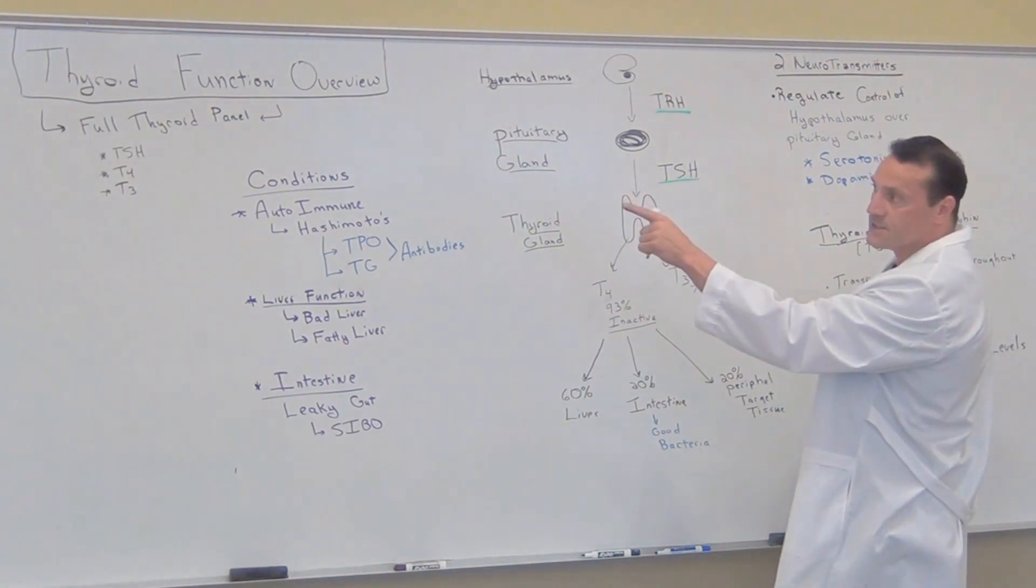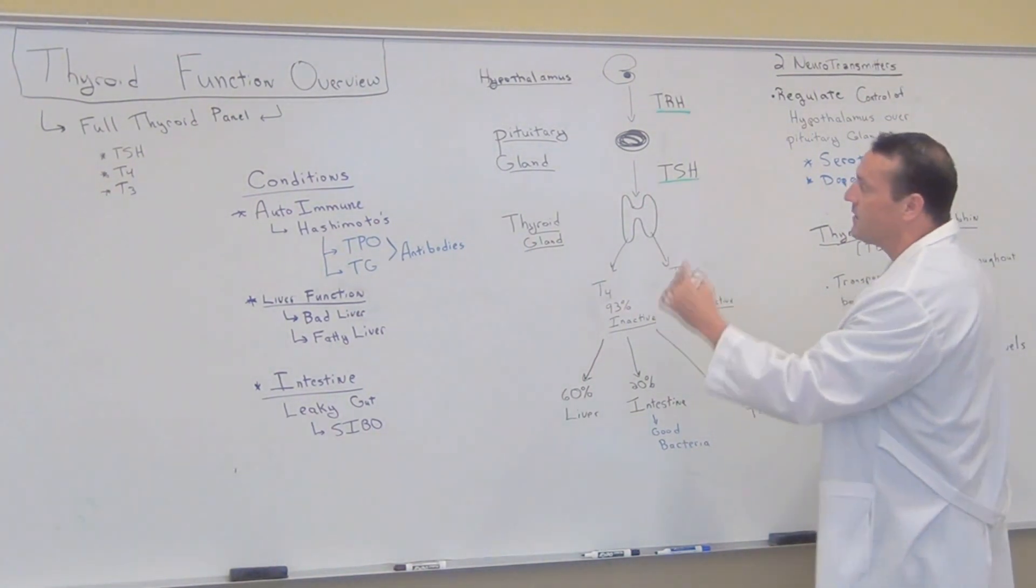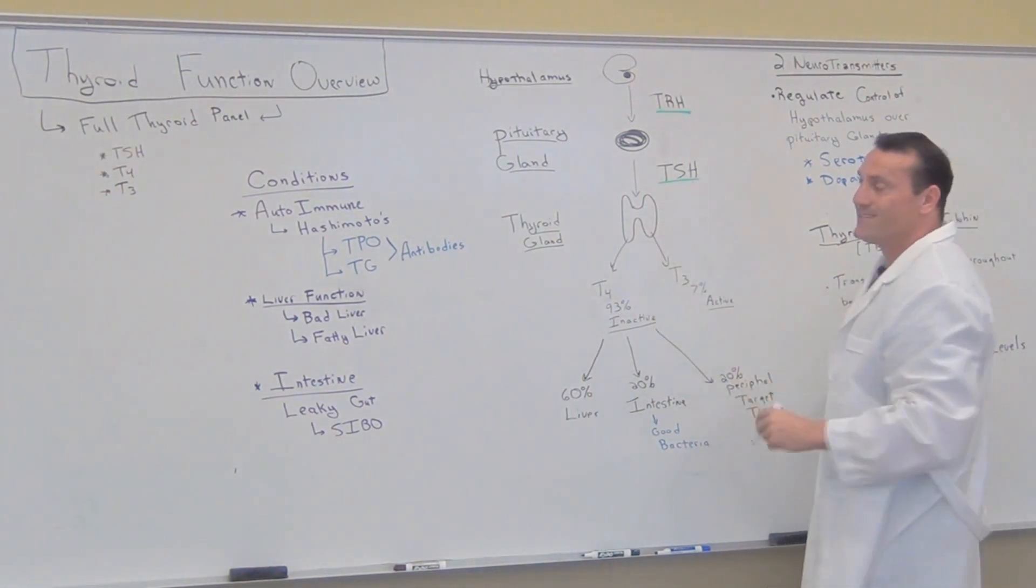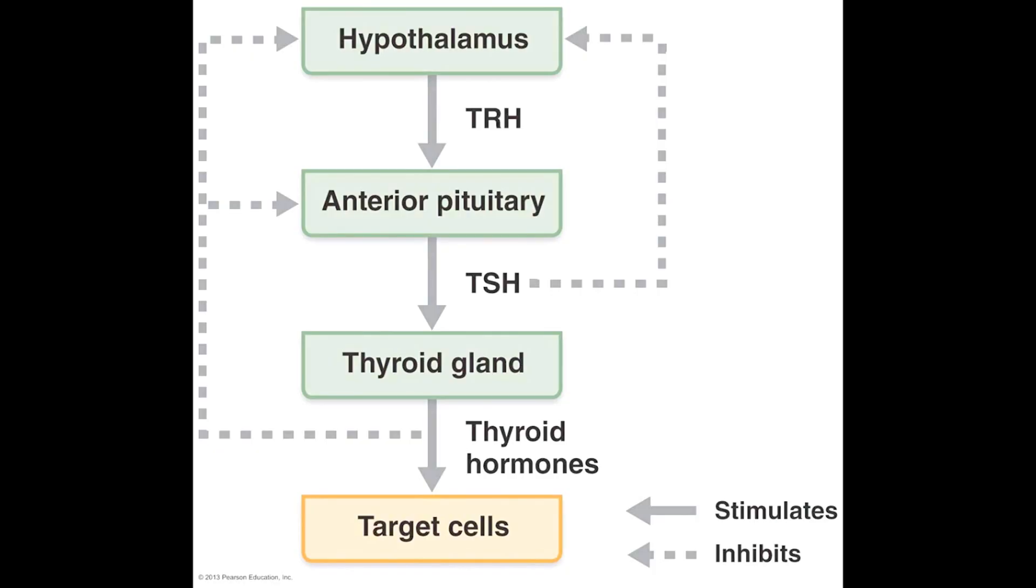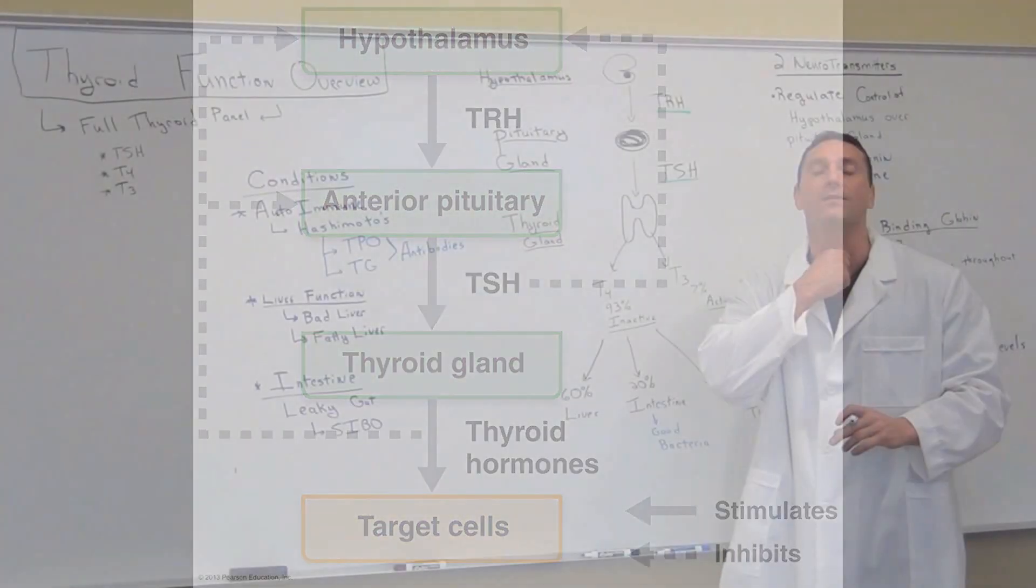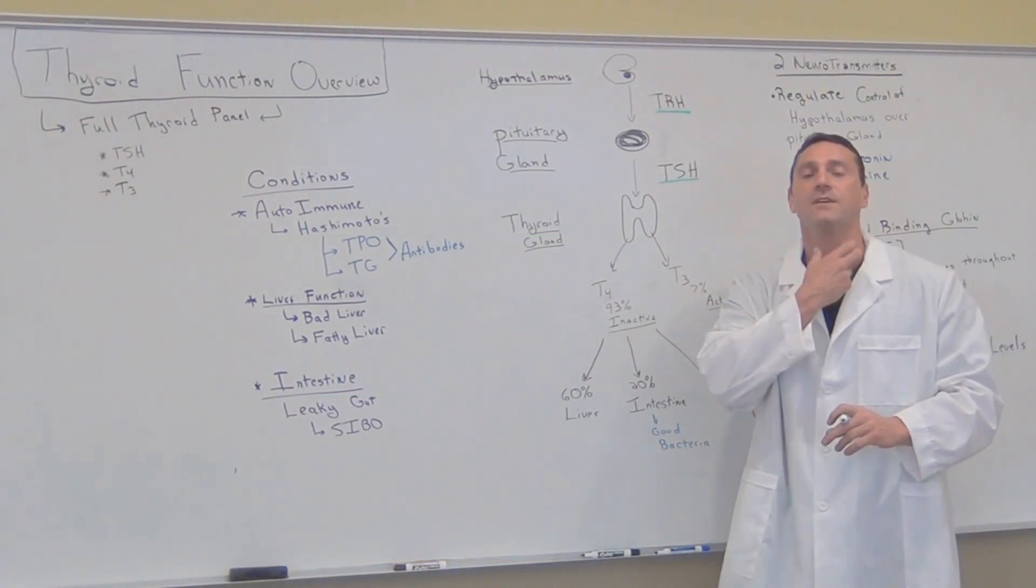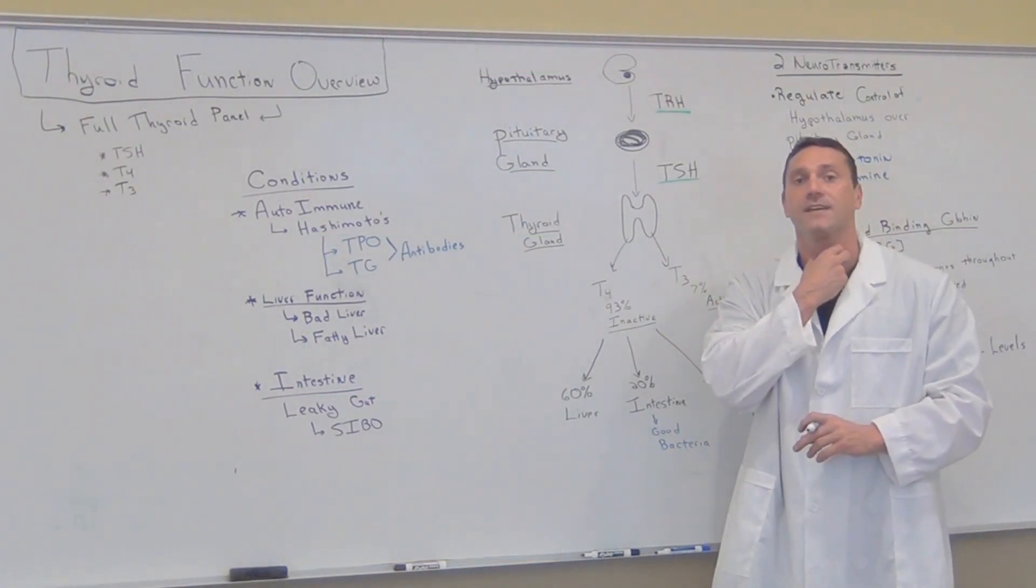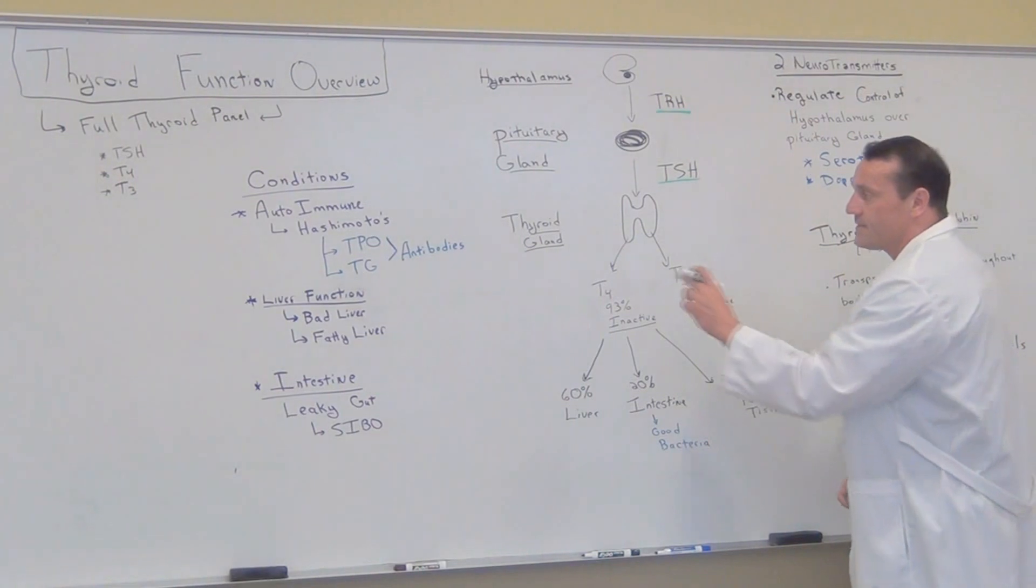Now these are one of the markers that are traditionally tested on a thyroid panel. So the thyroid stimulating hormone sends a signal to the thyroid gland which is in the middle of the neck, right below the thyroid cartilage, butterfly shaped on either side of the windpipe. That's a thyroid gland.